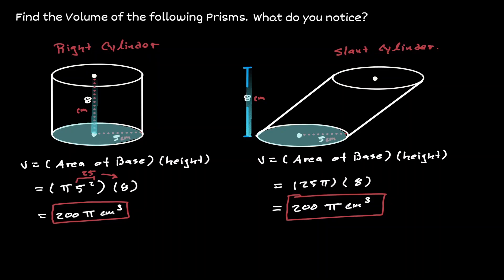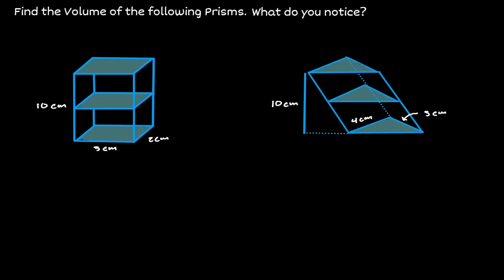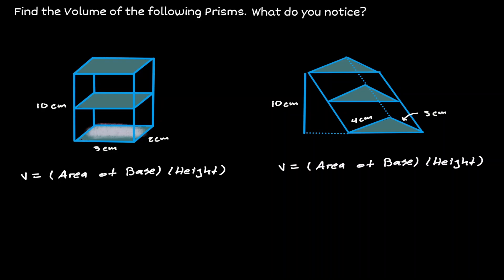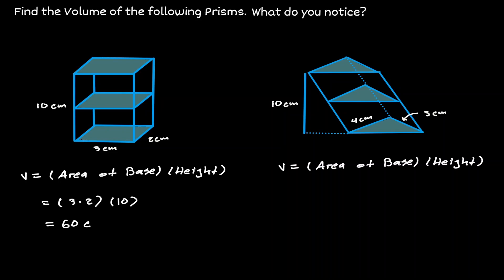Let's look at one more scenario. Here we have two prisms, but notice that they do not have the same base. On the figure on the left, the base is a rectangle, and on the figure on the right, the base is a triangle. But both of those figures share the same height of 10 centimeters. For the prism on the left, the volume is the area of the base times the height. Because we have a rectangle, the area is base times height, which is 3 times 2. The height is 10 centimeters, giving us a total of 60 centimeters cubed.